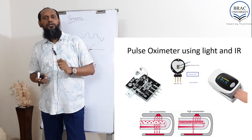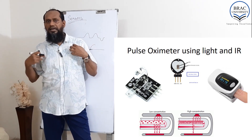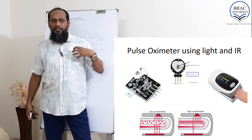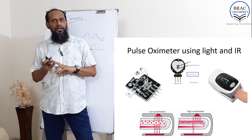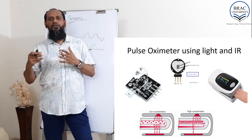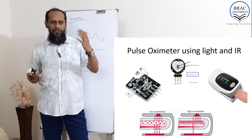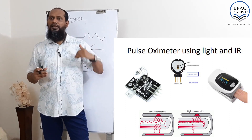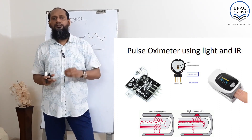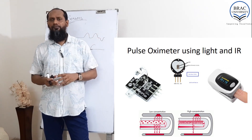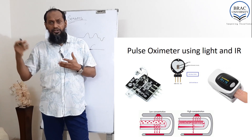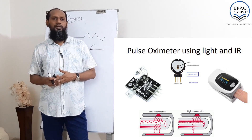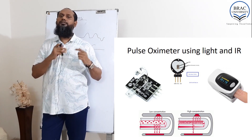This is a very important sensor in the current world. When coronavirus attacks us, it attacks our lungs. When the lungs cannot function well, oxygen level decreases. In a healthy human being, oxygen level shows 97 to 100 percent. If the oxygen level drops below 90 percent, external oxygen must be provided. By using a pulse oximeter, you can understand whether your lungs are functioning well or not. The sensor works on the principle of light.